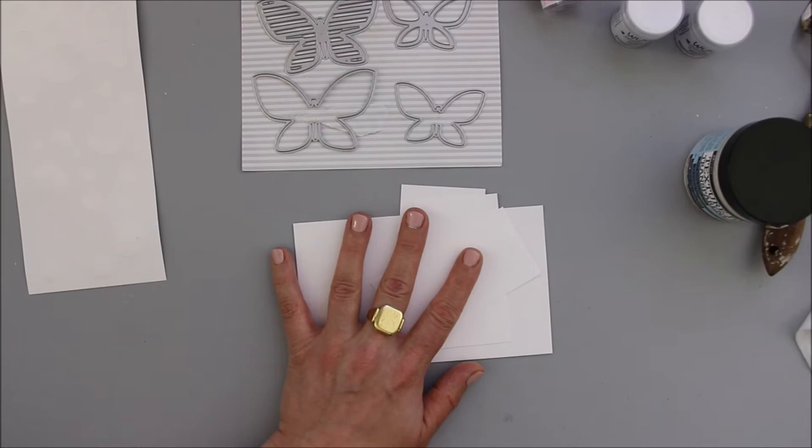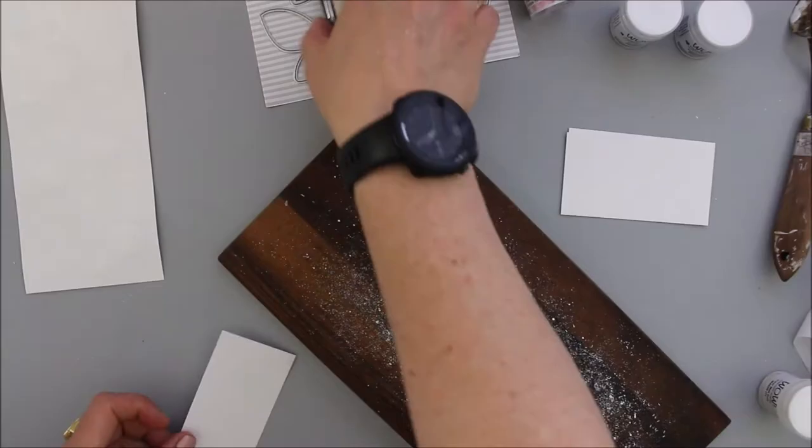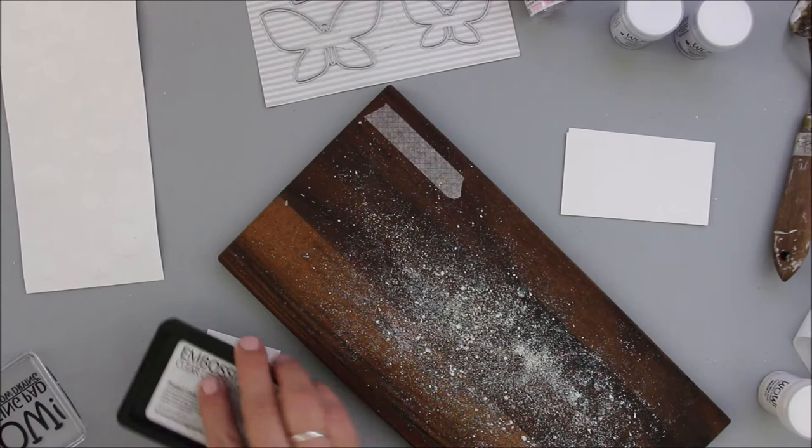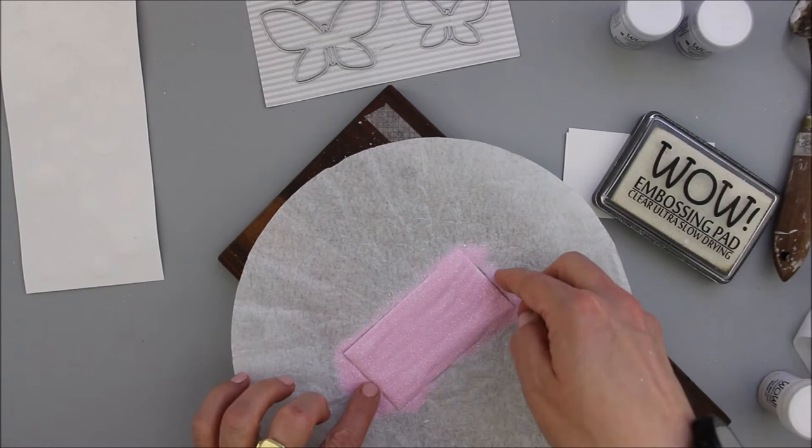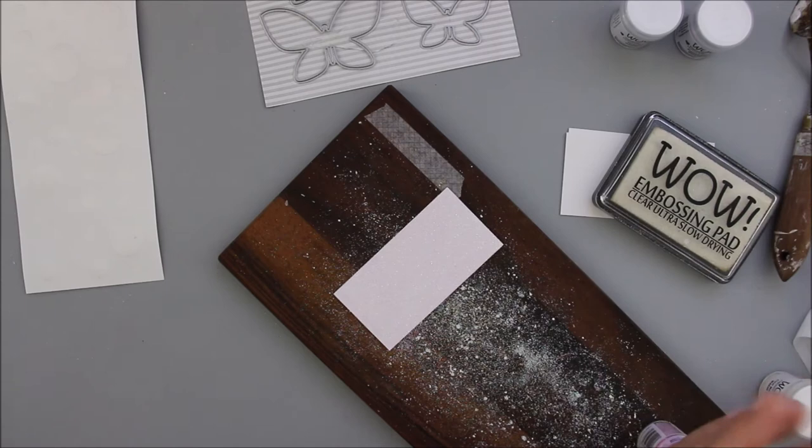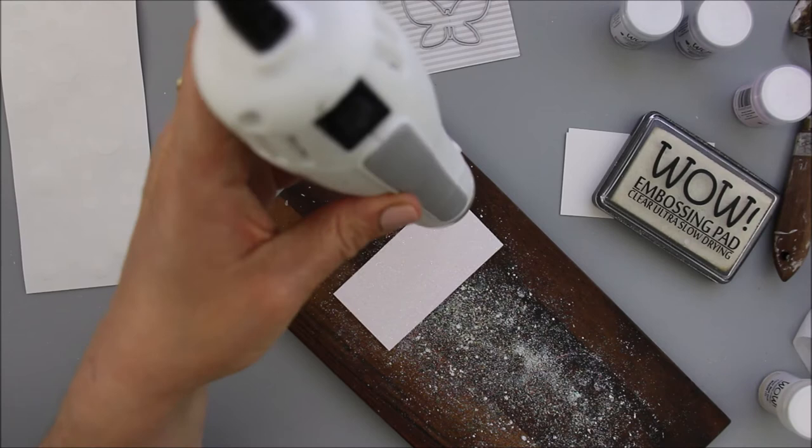In the meantime I will do the easiest thing when it comes to heat embossing: cutting down some pieces of cardstock, applying the embossing ink using the WOW embossing clear ultra slow drying embossing ink, adding the embossing powder which is Pink to Two, funneling the excess powder back into the jar, and heat setting the powder.